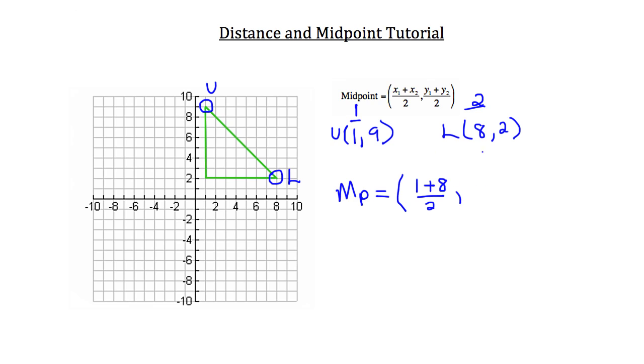comma the y coordinate from point 1, which is 9, plus the y coordinate from point 2, which is 2, all over 2.